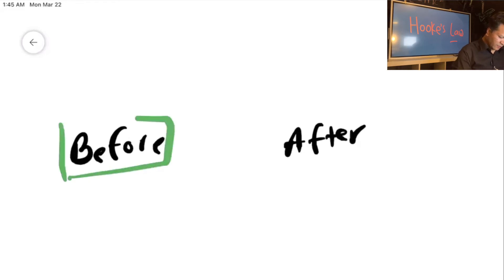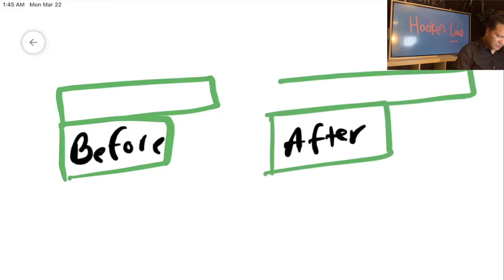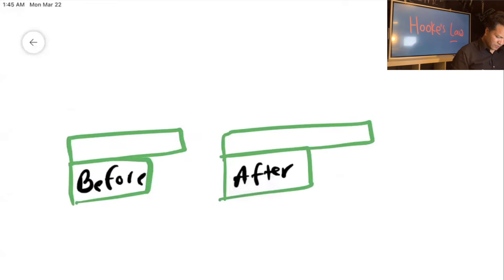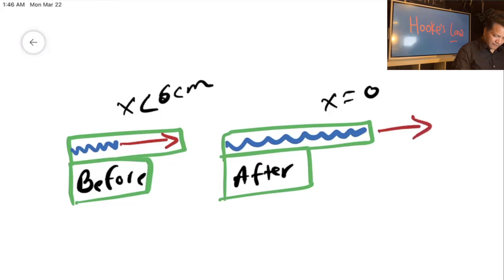What do you have before? Before you have a bullet inside the gun. What do you have after? After you have the bullet outside the gun. So the bullet inside the gun means the spring is compressed and the bullet is inside the gun. The other one is the spring is at relaxed length, that means x equals zero. The before means x equals less than zero - I mean six centimeters. And the bullet is outside the gun.